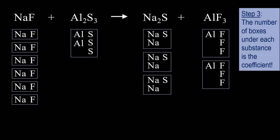step 3 is adding the coefficients, which is the number of boxes under each element. 6 for NaF, 1 for Al2S3, 3 for Na2S, and 2 for AlF3.